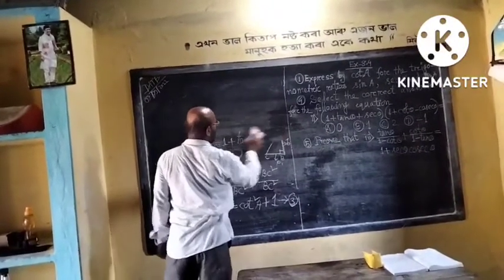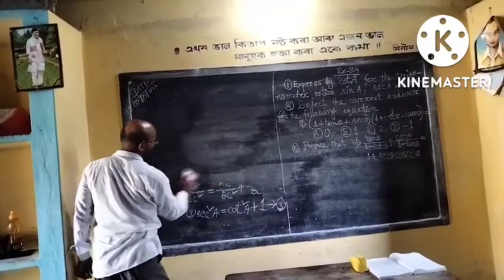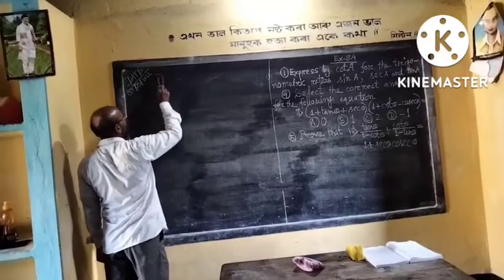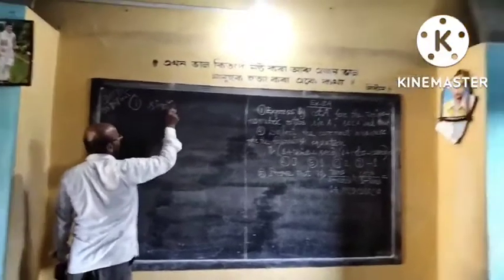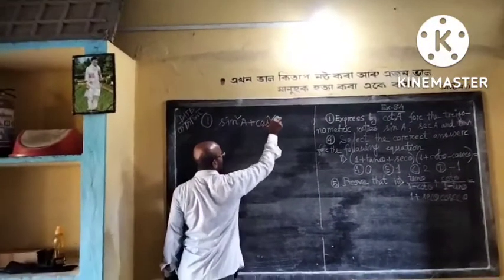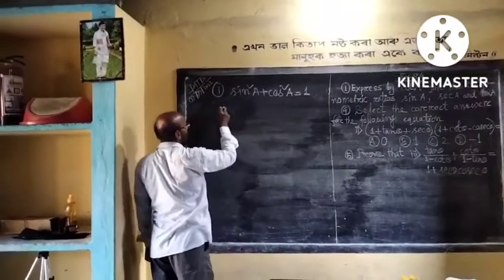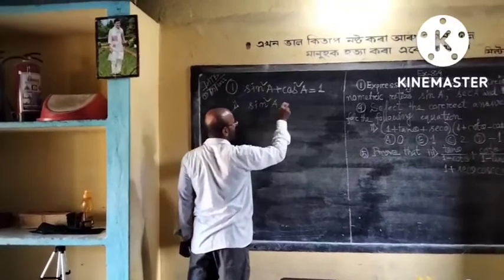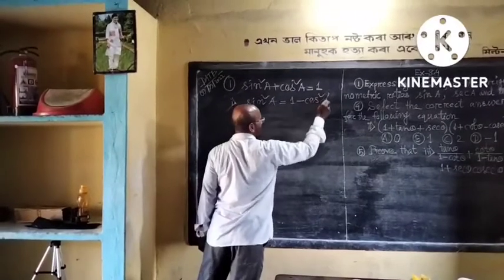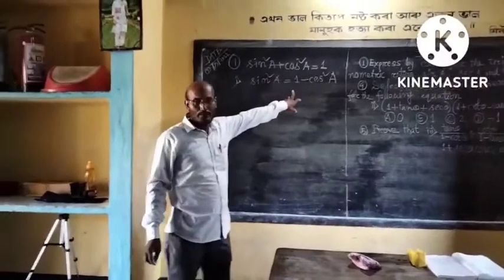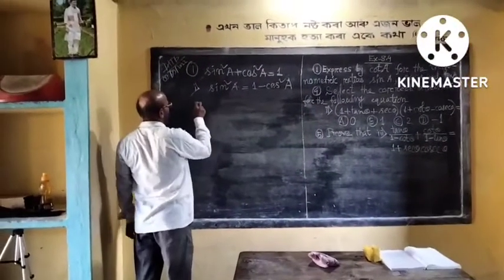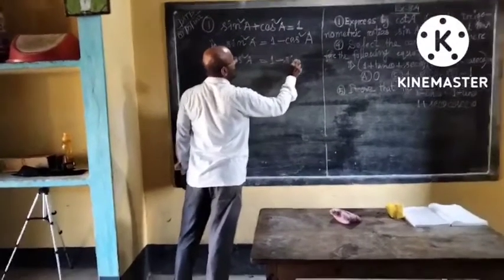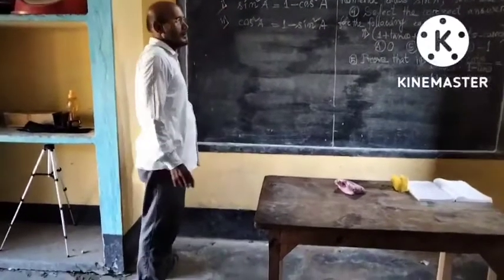We can find some other relations from these identities. Identity number 1: sine squared E plus cos squared E is equal to 1. From this, sine squared E is equal to 1 minus cos squared E. We can write 1 minus cos squared E as number 2: cos squared E is equal to 1 minus sin squared E.